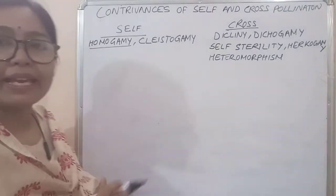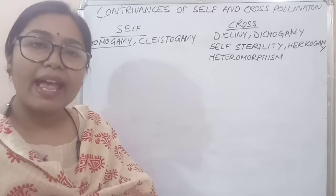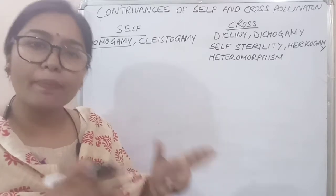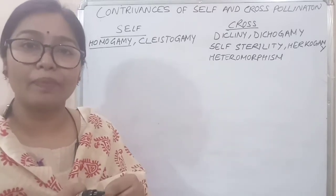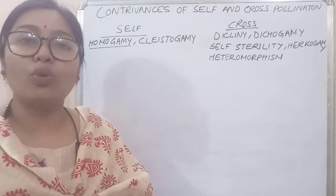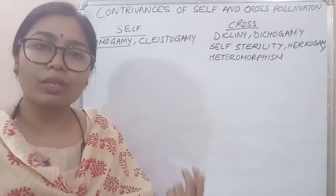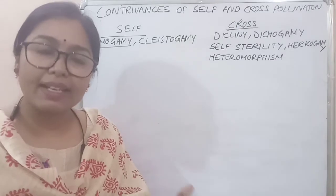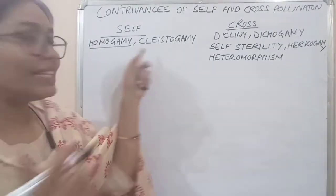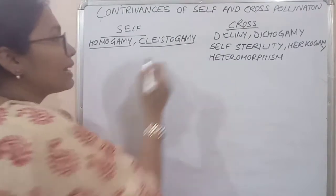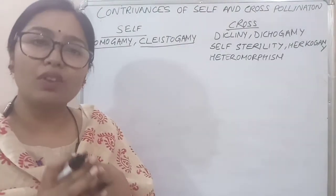In self-pollination, there is homogamy. Homogamy means when the anther and gynoecium — that is, the androecium and gynoecium — mature at the same time. The maximum flowers which are self-pollinated are of this type. And what is cleistogamy? Cleistogamy is where a complete flower never opens.